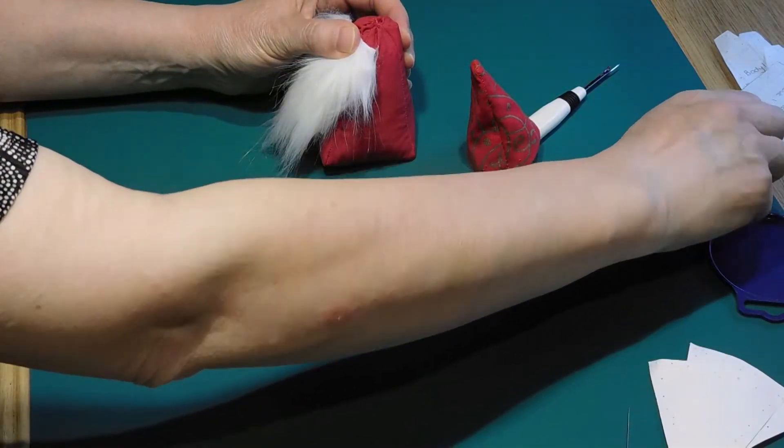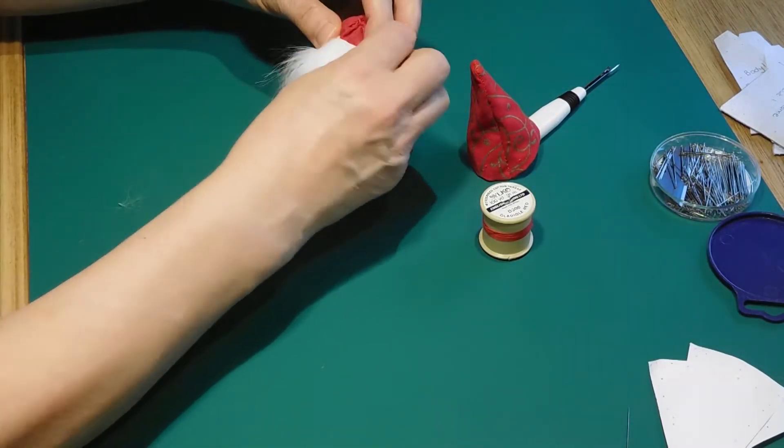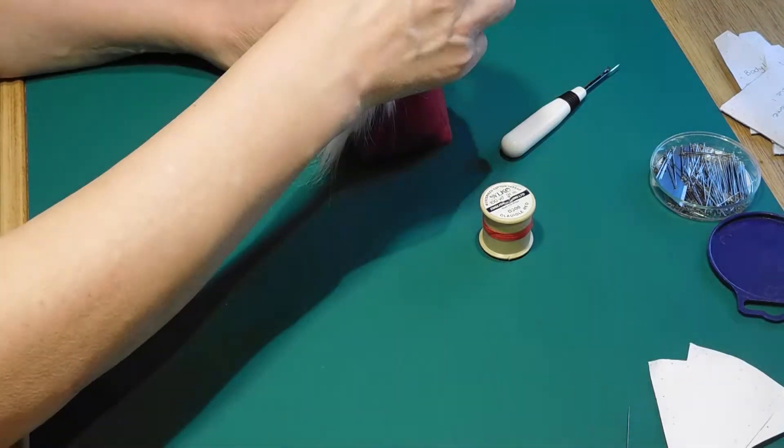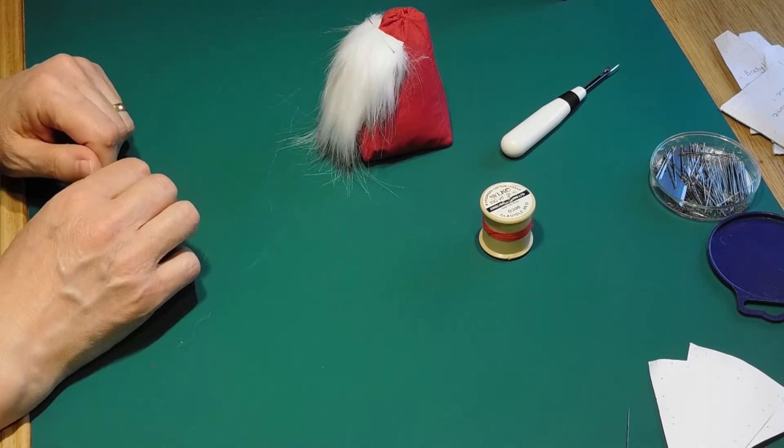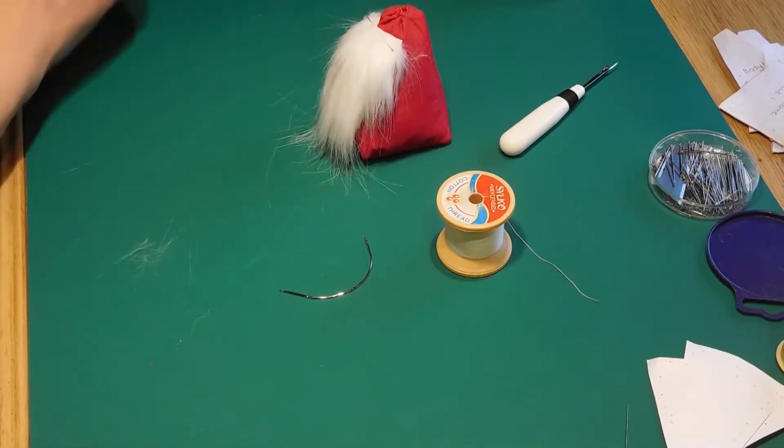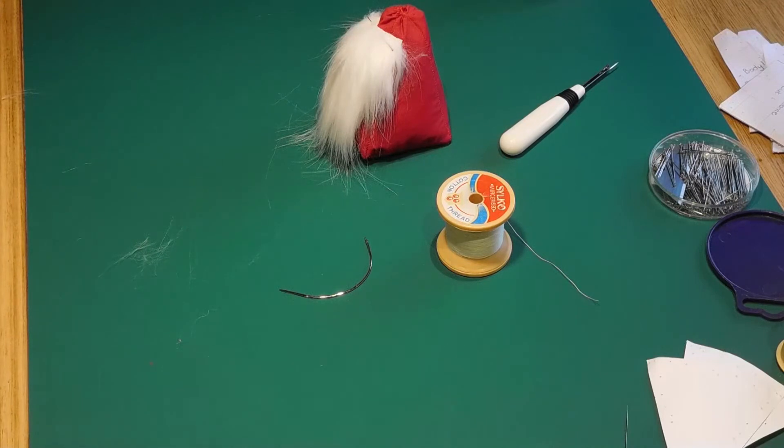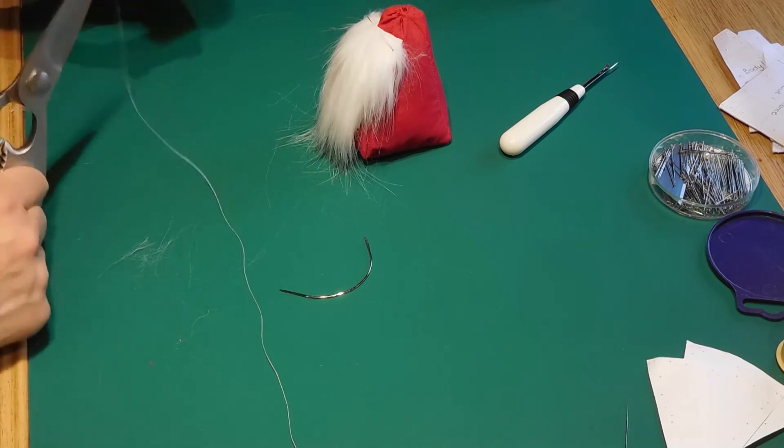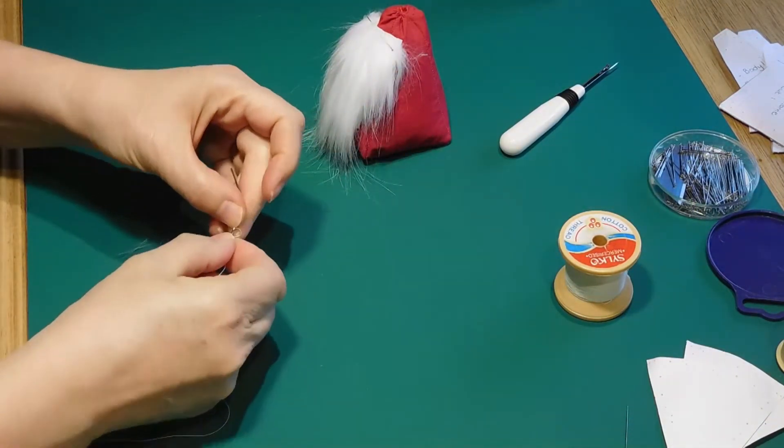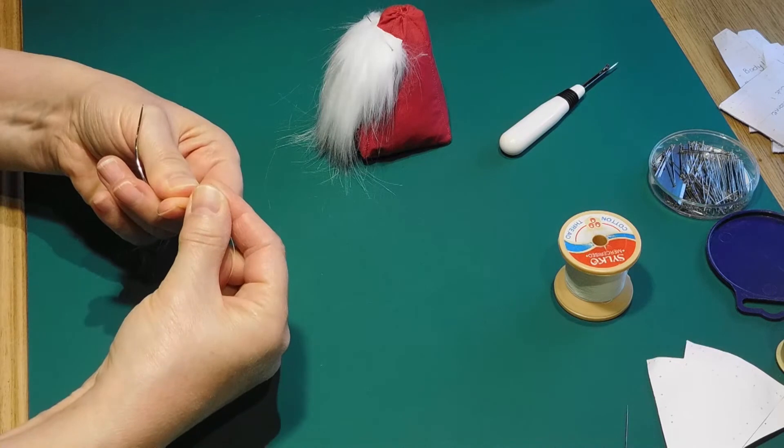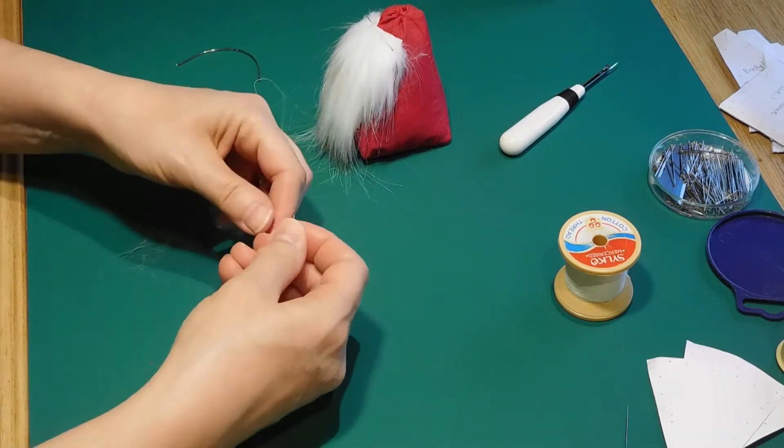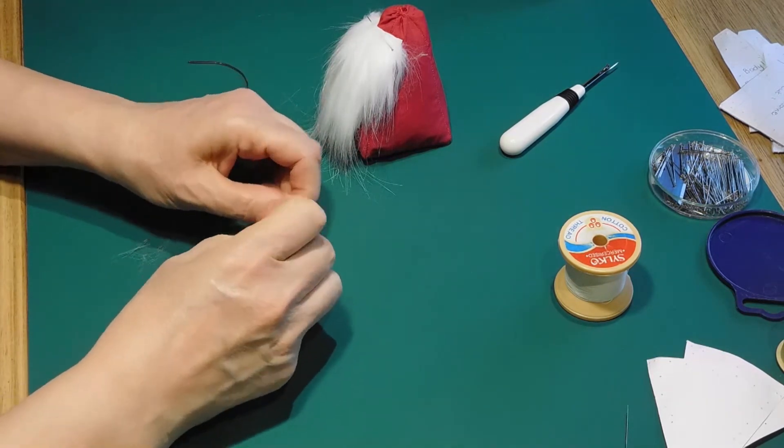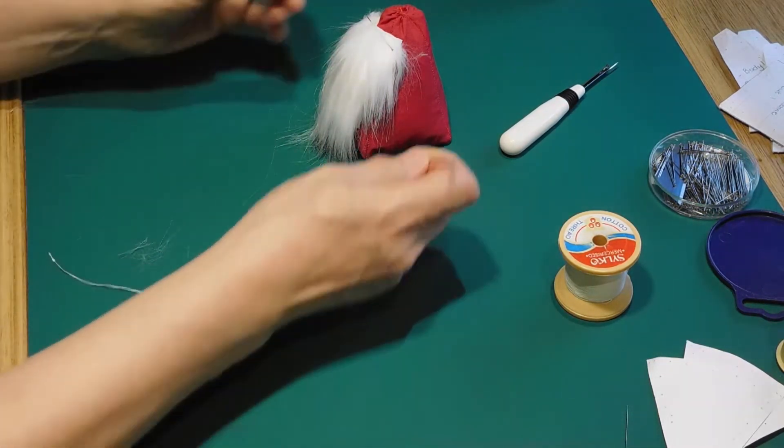Pin the fur onto the front of the gnome, making sure it sits up under the hat a little. Using thread of the same color as the fur, doubled and with a knot in the end, remove the hat and begin to attach the fur, ensuring it is straight by checking how it looks regularly. I found a circular needle helped me to do this, but you can manage with a long straight one. I sewed across the top of the fur and then secured it underneath too.